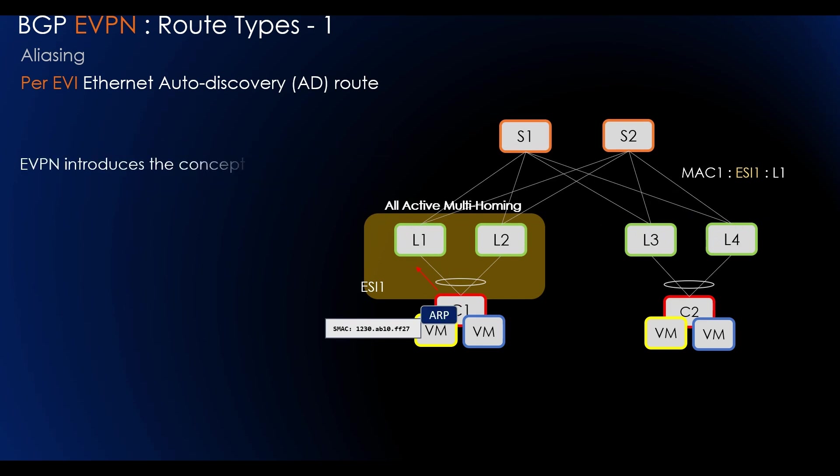To address this issue, EVPN introduced the concept of aliasing, which is the ability of a PE to signal that it has reachability to an EVPN instance on a given Ethernet segment. The Ethernet AD per EVI route is used for this purpose. When a remote PE or leaf receives a MAC IP advertisement route with an ESI, it considers that the advertised MAC address is reachable through all the PEs that have advertised reachability to the MAC address via the Ethernet segment. This reachability is determined by a combination of Ethernet AD per EVI route and AD per ESI route.